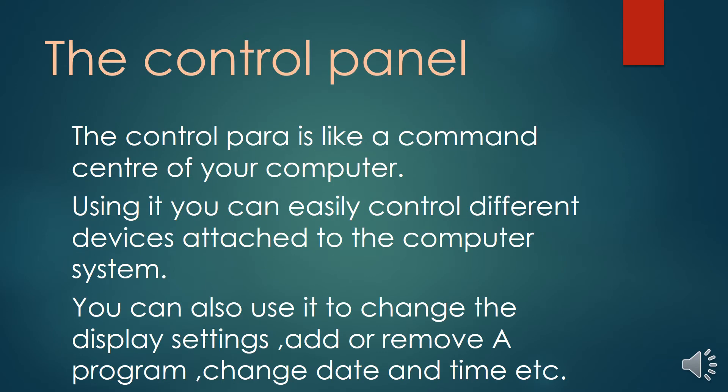Next, the control panel. In your previous classes you have learned about the desktop background, window color, and screen saver, and how to change them. Now let's learn about the control panel of MS Windows 7. The control panel contains a number of categories. All these categories help us to manage different resources and functioning of the computer system. In simple words, the control panel is like a command center of your computer.